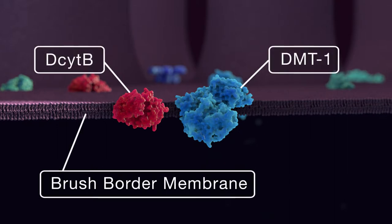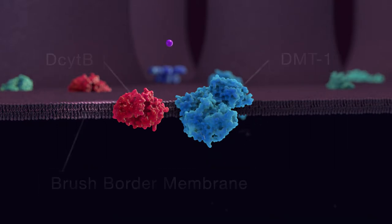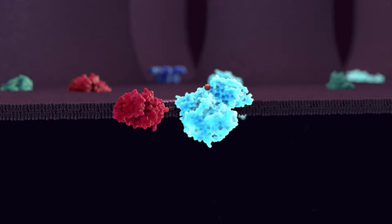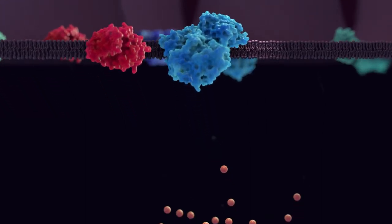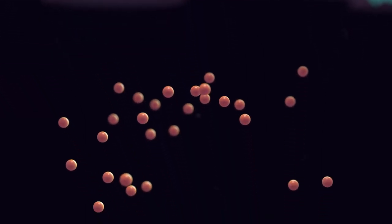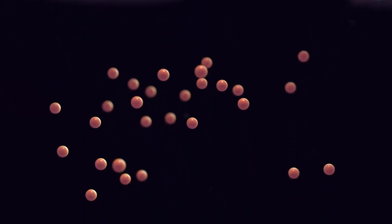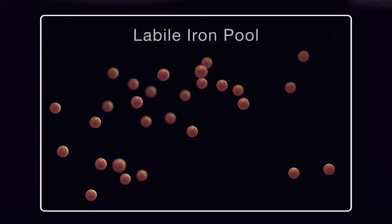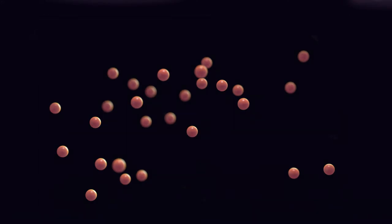Non-heme iron is in its oxidized ferric state and must be reduced prior to its transport. D-Cyte B duodenal cytochrome B has ferric reductase activity and reduces the ferric iron to ferrous iron. The DMT-1 transporter then transports the reduced iron across the brush border membrane. The reduced iron is then added to the labile iron pool.